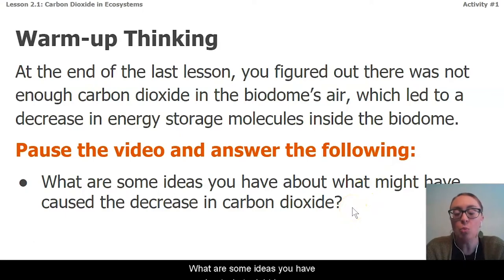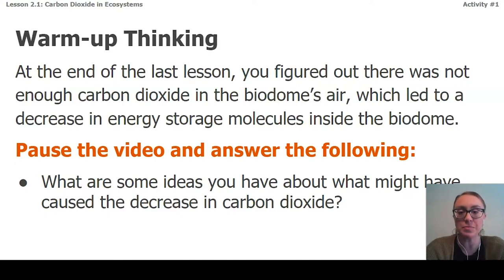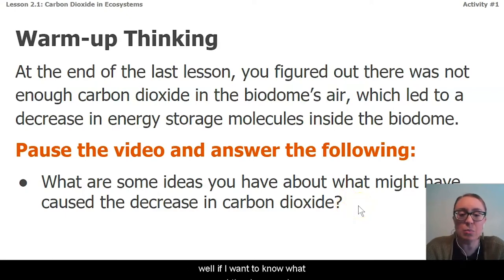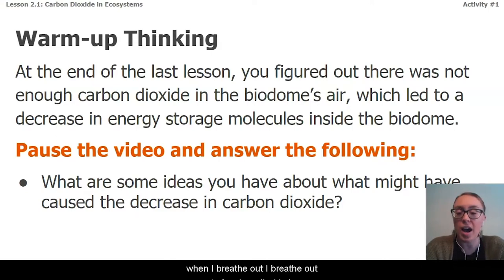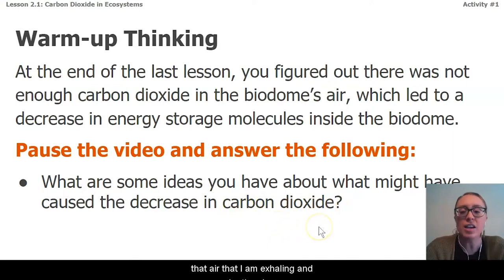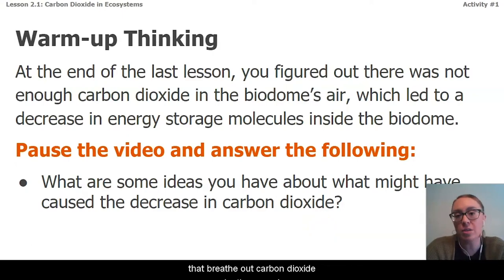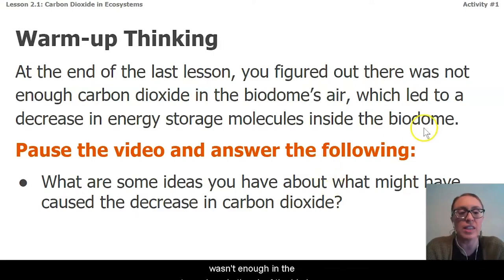What are some ideas you have about what might have caused the decrease in carbon dioxide? One thing that makes sense to me is: if I want to know what caused the decrease in carbon dioxide, maybe I need to think about where the carbon dioxide comes from. I know that as a human, when I breathe out, I breathe out carbon dioxide, so maybe there's some connection between people or other animals that breathe out carbon dioxide and why there wasn't enough in the air of the biodome.